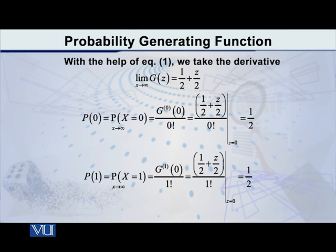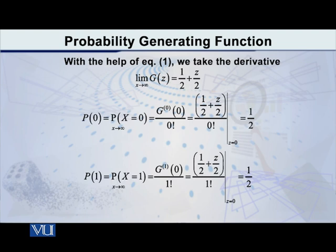For the second value, x equal to 1, we want to find the probability through the PGF formula. We have to take the first derivative of the PGF, divide by 1 factorial, and then put z equal to 0. The first derivative of 1/2 plus z/2 is 0 plus 1/2, meaning 1/2. Dividing by 1 factorial gives 1/2. Substituting z equal to 0, the answer is 1/2.